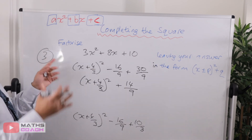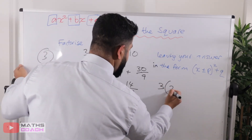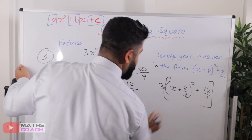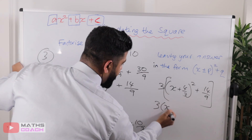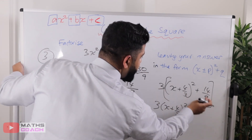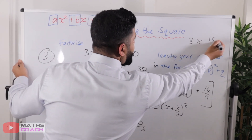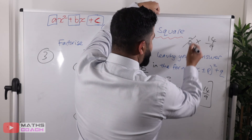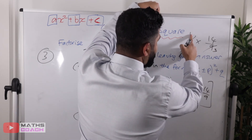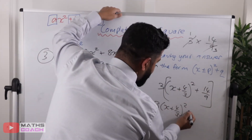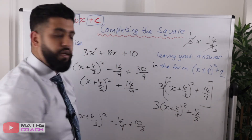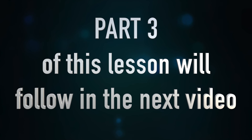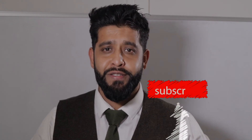Remember the 3 — I have to reintroduce that now. So I have 3 times the bracket containing x plus 4 over 3 squared plus 14 over 9. Multiplying through: 3 times the first term gives 3 times (x plus 4 over 3) squared. For 3 times 14 over 9, the 3 and 9 share a common factor of 3: 9 divided by 3 is 3, 3 divided by 3 is 1, giving 14 over 3. So the final answer is 3(x plus 4 over 3) squared plus 14 over 3.